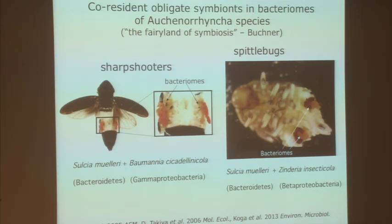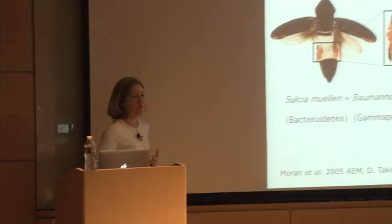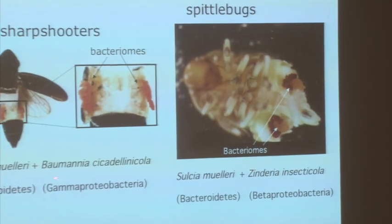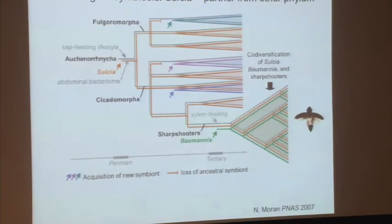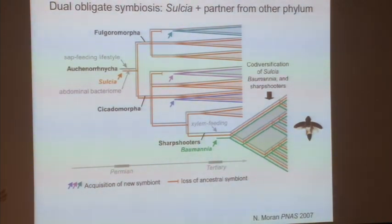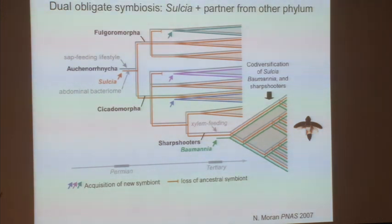In sharpshooters, they have a specialized bacteriome that's actually brightly colored without any dyes, and it houses two different symbionts. One is called Sulcia muelleri, after a Moravian embryologist who studied leafhoppers, and Baumannia, after Paul and Linda Bauman — a gamma proteobacterium. For example, the glassy-winged sharpshooter, a pest of grapes in California that transmits grape disease, has both of these symbionts. Every sharpshooter has both of them, from completely different bacterial groups.